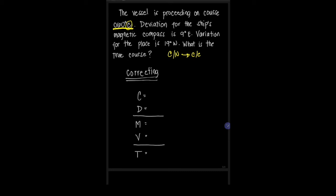Deviation for the ship's magnetic compass is 9 degrees east, as stated in the deviation table for that ship. Variation for the place is 19 degrees west, as also indicated on the chart that you are currently using. So what is the true course?